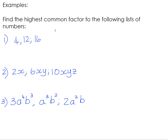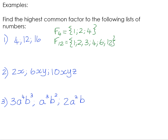It's often useful to make lists of the factors. The factors of 4 are 1, 2, and 4. The factors of 12 are 1, 2, 3, 4, 6, and 12. The factors of 16 are 1, 2, 4, 8, and 16. Looking at these lists to find the HCF, the biggest number common to all three lists is 4. 6 doesn't go into 4, and 8 doesn't go into 4. So the highest common factor of all three numbers is 4.